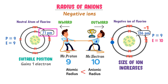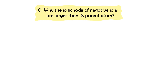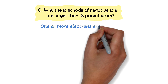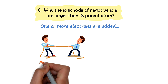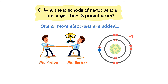For example, the atomic radius of fluorine is 71 picometers and the ionic radius of the fluorine ion is about 119 picometers. Bonus conceptual question: Why are the ionic radii of negative ions larger than the size of their parent atoms? It is because one or more electrons are added to a neutral atom. As a result, the number of electrons dominates the number of protons, and the electrons and shells are pushed away in the outward direction. Thus, the ionic radius of negative ions is larger than the size of their parent atom.